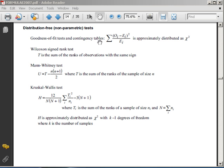Contingency tables are distribution-free tests as well as the Wilcoxon test and the Sine test which is not mentioned here, and then the final two, the Mann-Whitney U-test and the Kruskal-Wallis test. These are all distribution-free or non-parametric tests.